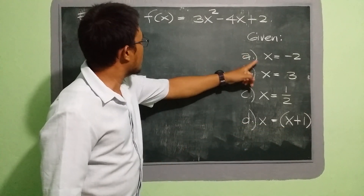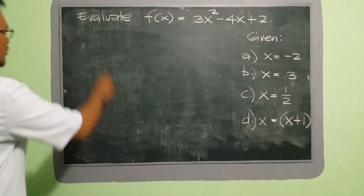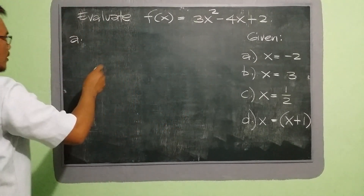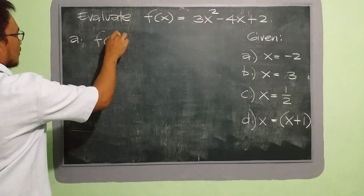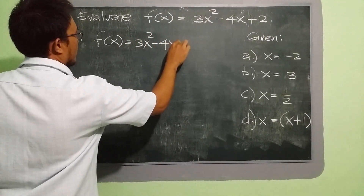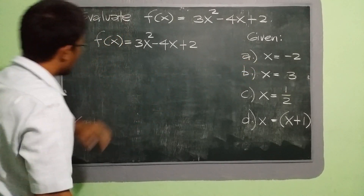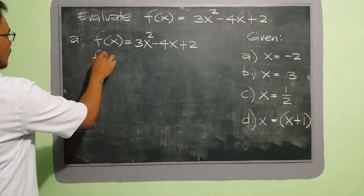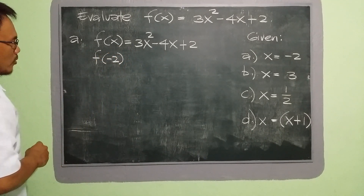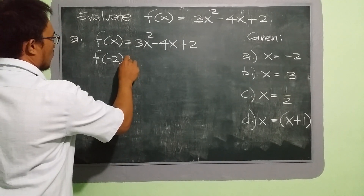We're going to start evaluating using the value of x in letter a, which is negative 2. We need to copy first the given function, which is f of x is equal to 3x squared minus 4x plus 2. So our given value of x in letter a is negative 2, so we're going to put f of negative 2 and substitute x with negative 2.